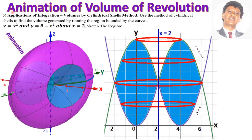The second animation is again an animation of volume of revolution. Use the method of cylindrical shells to find the volume generated by rotating the region bounded by y equals x squared and y equals 8 minus x squared about x equals 2. The bottom curve is y equals x squared, the top curve is y equals 8 minus x squared, shifted up by 8, and the axis of rotation is x equals 2.